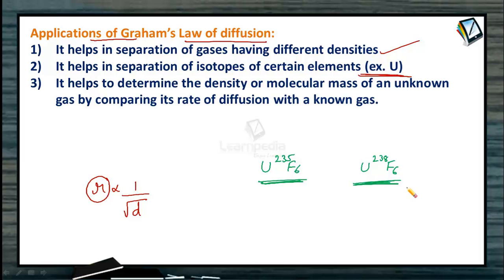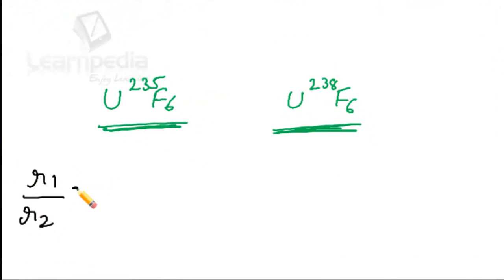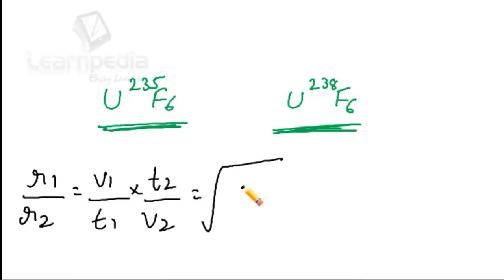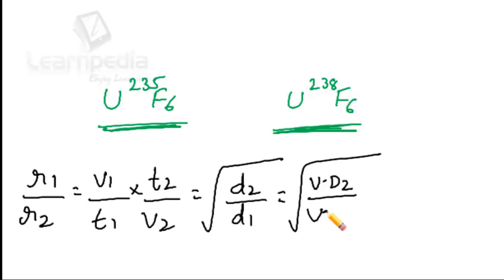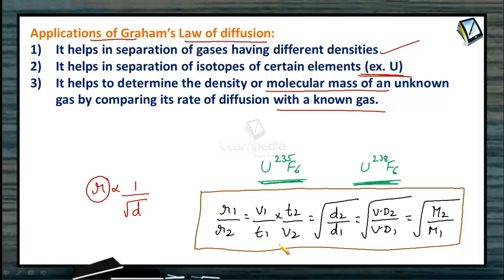The third application is that it helps to determine the density or molecular mass of an unknown gas by comparing its rate of diffusion with a known gas. Using the relation R1/R2 = (V1/T1) × (T2/V2) = √(D2/D1) = √(VD2/VD1) = √(M2/M1), we can find the vapor density or molecular mass of the unknown gas. That covers the applications of Graham's law of diffusion.